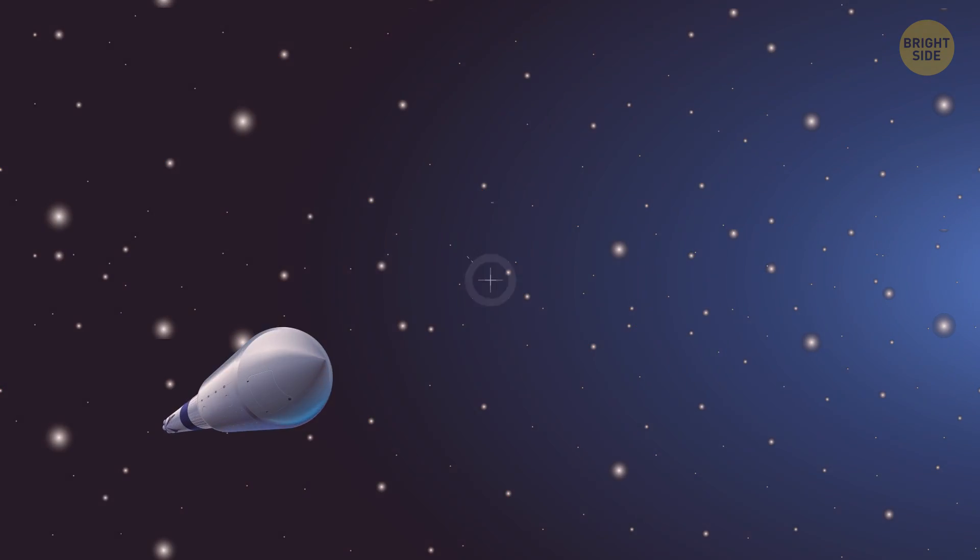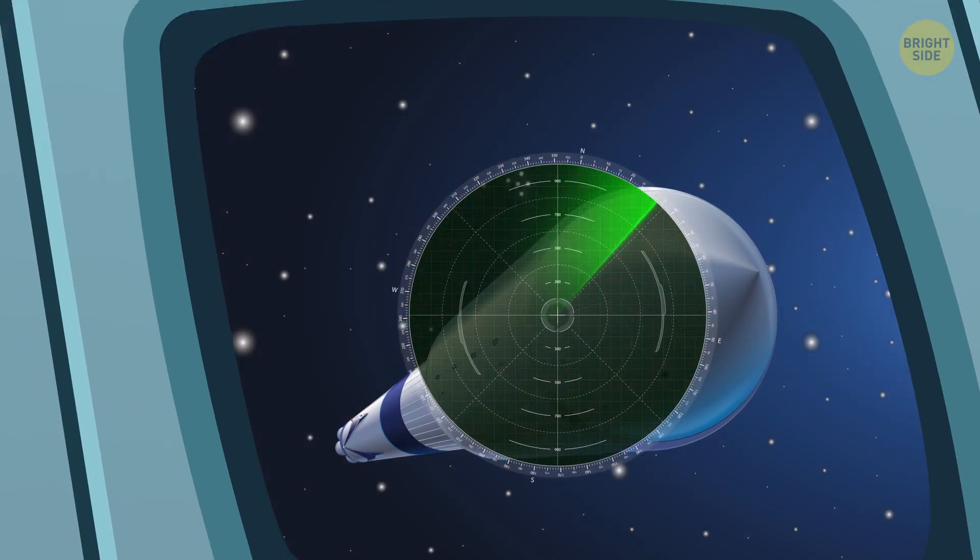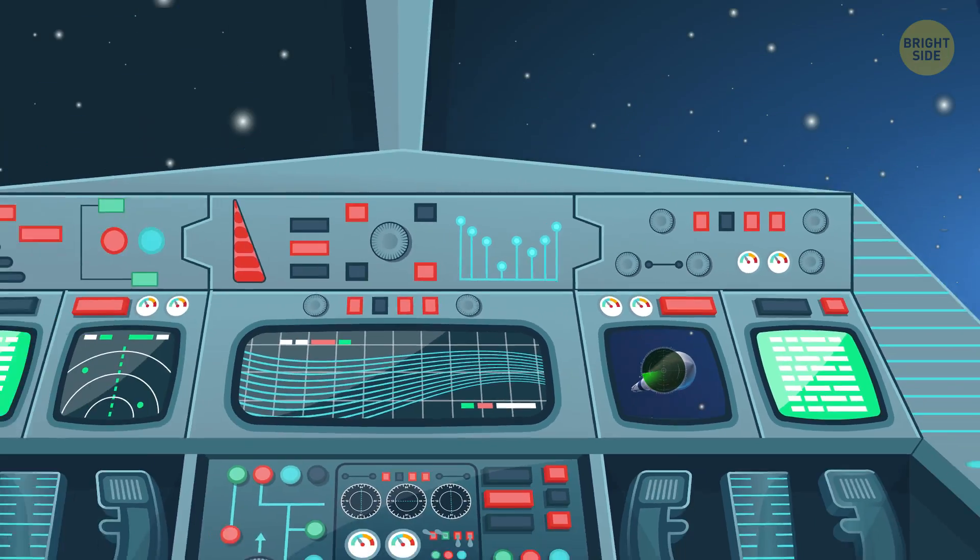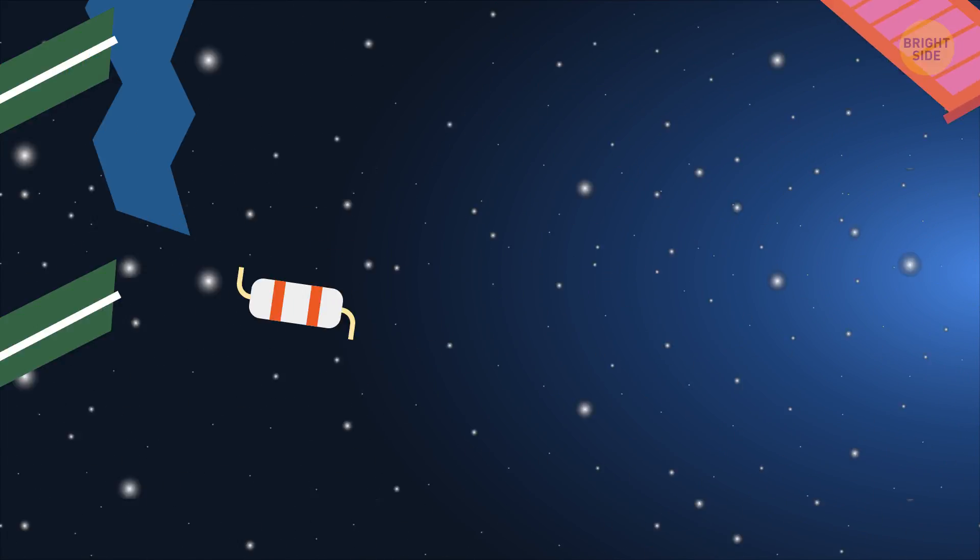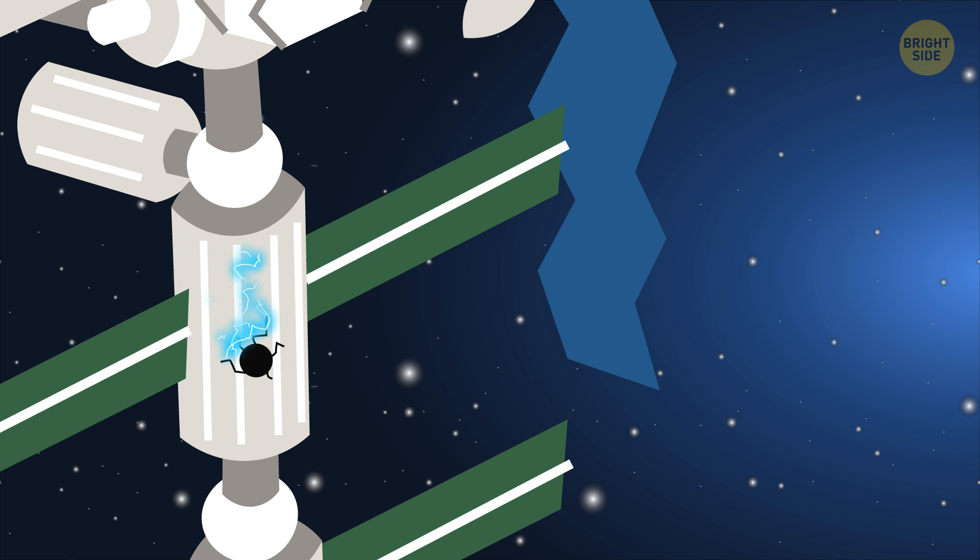This garbage, seemingly harmless, soaring in outer space, is a serious threat to the ISS. Even a dime-sized fragment of a satellite can penetrate the station's casing and lead to major problems.